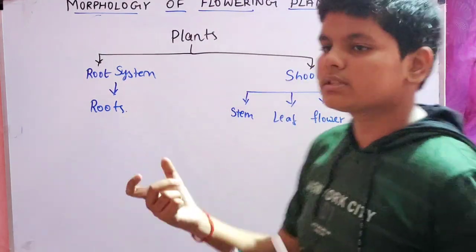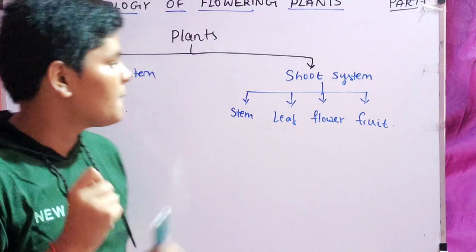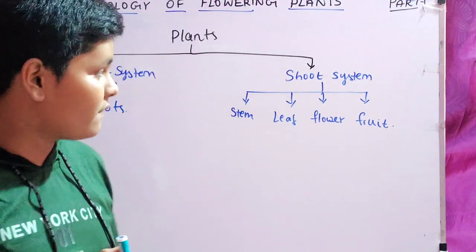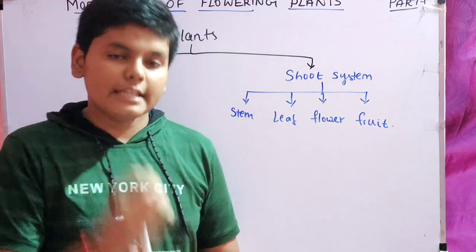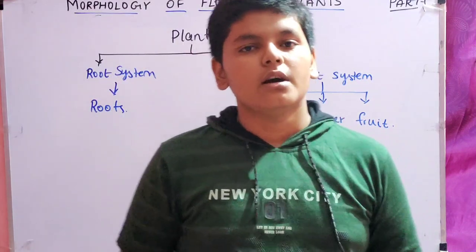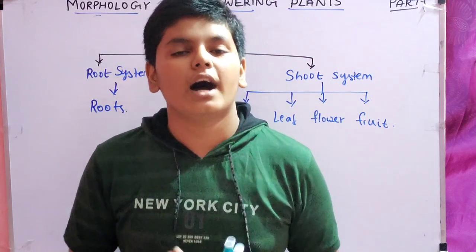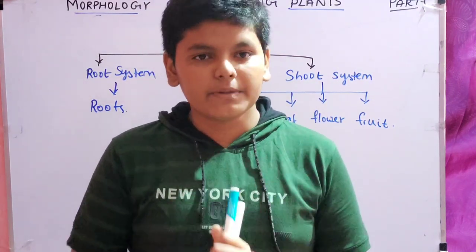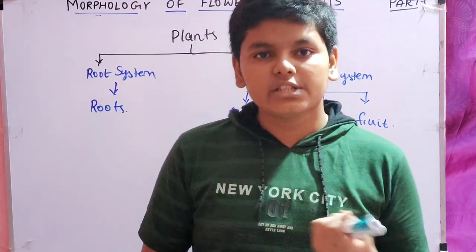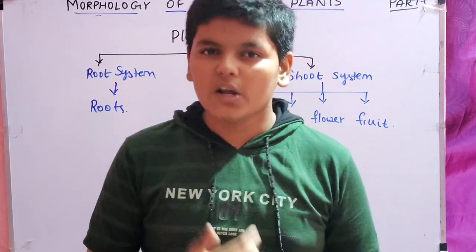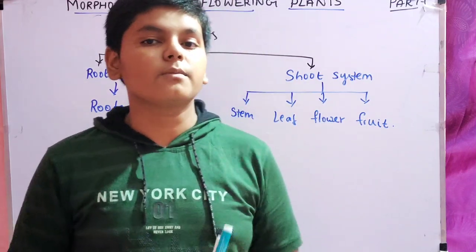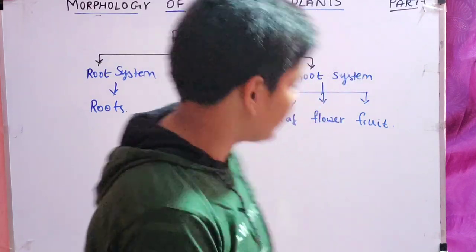Each plant does not have the same kinds of roots, stem, flower, leaf, and fruit. Each plant has modified itself. What is modification? Modification means you are adapting to a surrounding — changing yourself, undergoing a structural or functional change within an organism to adapt to the surrounding or habitat.